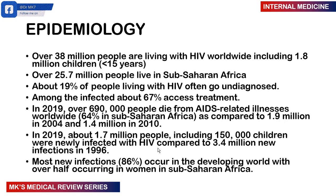The numbers are decreasing, but we're not where we need to be. In 2019, about 1.7 million people — including 150,000 children — were newly infected with HIV, compared to 3.4 million that were newly infected in 1996. There is an improvement, but we're not yet where we need to be.